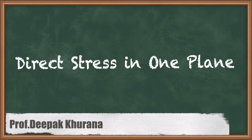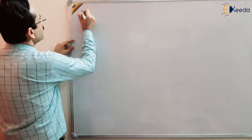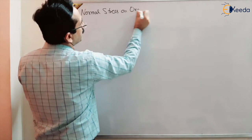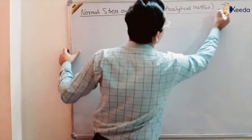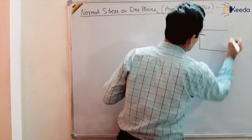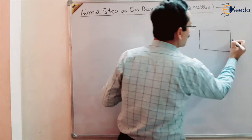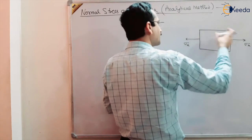Let us start the first case where we have applied normal stress on one plane, and due to that we want to find out the stresses on an oblique section — normal stresses and shear stresses at an angle theta to the given plane. We have applied normal stress on one plane, and we are using the analytical method for that. This is the stress element on which only normal stresses are applied. There is no shear stress and no stress on another plane.